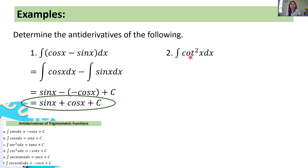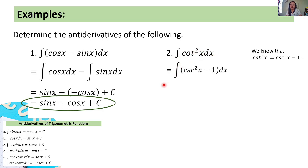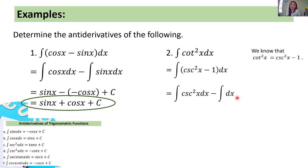Number two: the integral of cotangent squared x dx. We know that cotangent squared x equals cosecant squared x minus 1, so we rewrite this as the integral of the quantity of cosecant squared x minus 1 dx. Separating, we get the integral of cosecant squared x dx minus the integral of dx. The integral of cosecant squared x dx equals negative cotangent x plus c, and the integral of dx equals x. So the final answer is negative cotangent x minus x plus c.